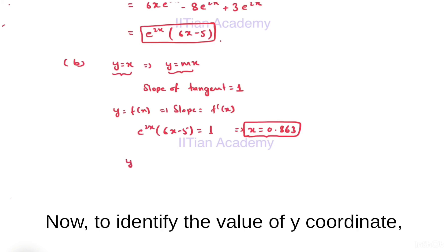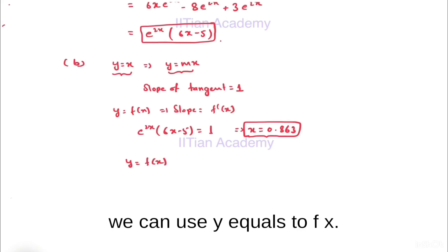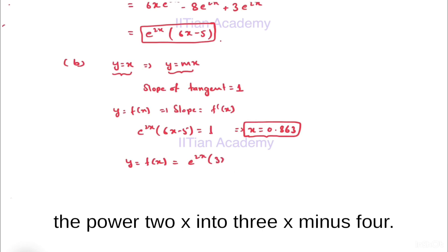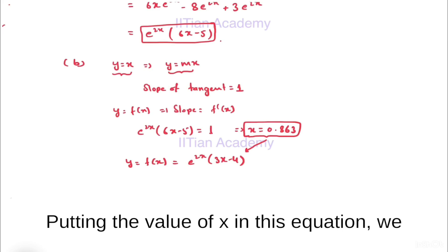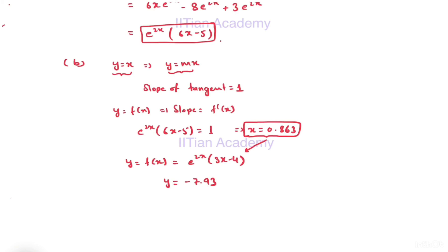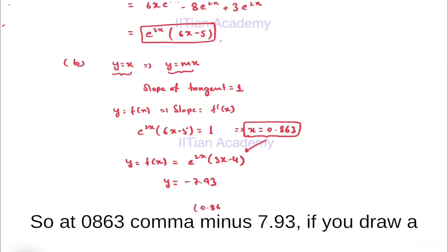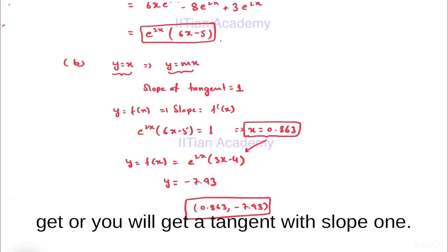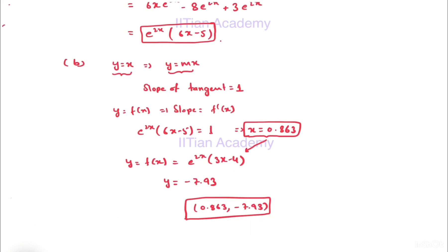To identify the y-coordinate we use y = f(x). The function is e^(2x)(3x - 4). Putting x = 0.863 into this equation, we get the value of y as -7.93. So at the point (0.863, -7.93), if we draw a tangent at this particular point on the graph, the tangent will have slope 1.